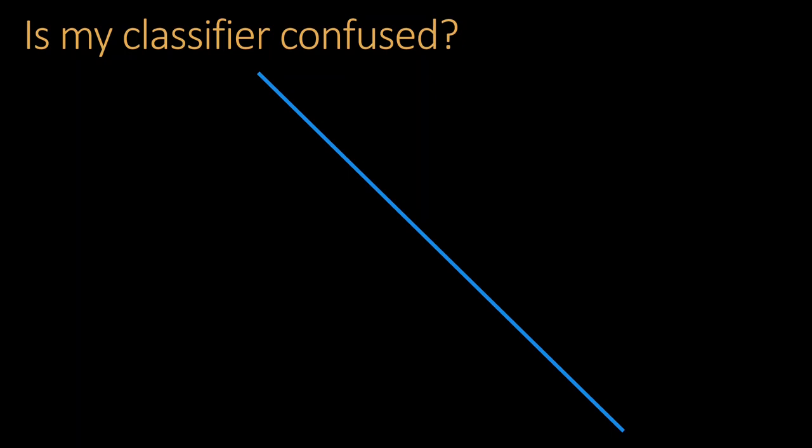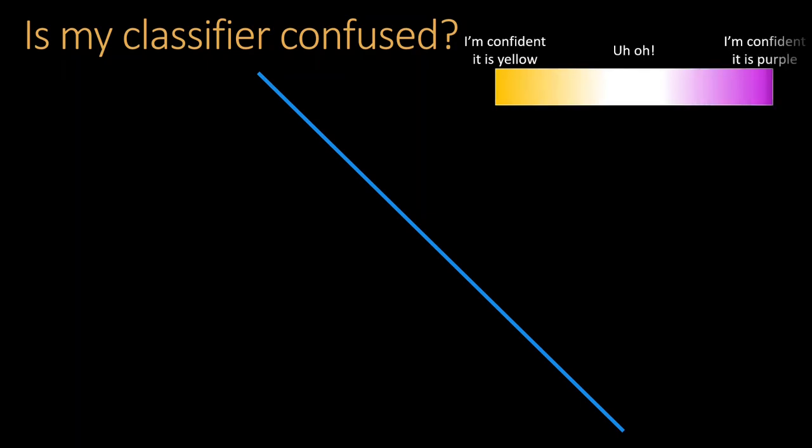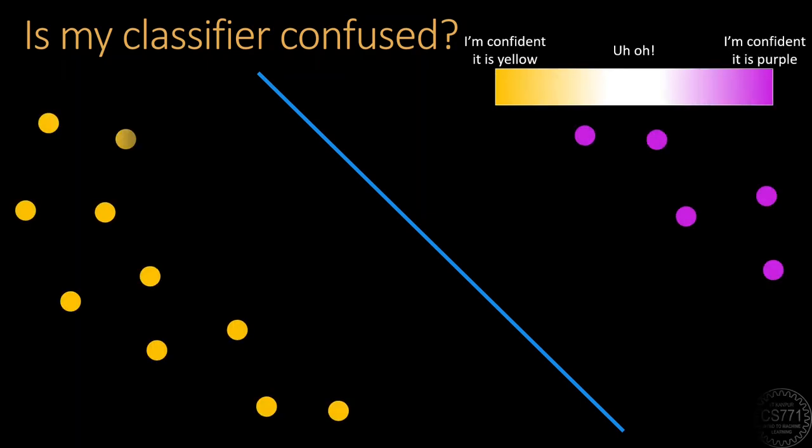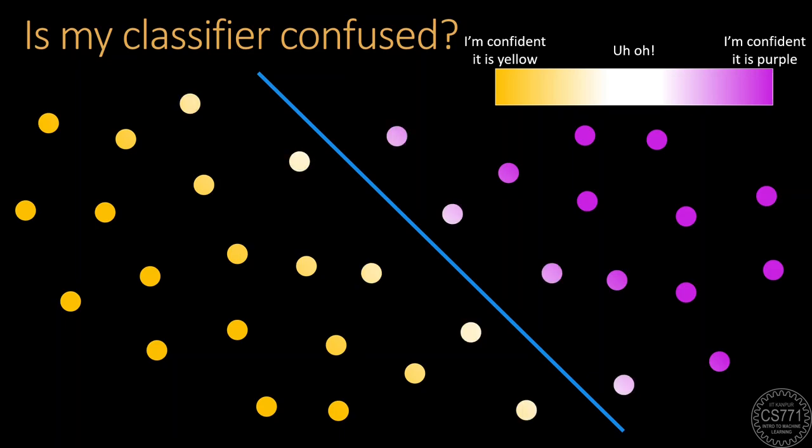In general, machine learning classifiers are most confident about their prediction on data points that lie far from the decision boundary. They get progressively less confident as the points get closer to the decision boundary, and they are completely confused about points that lie exactly on the decision boundary.